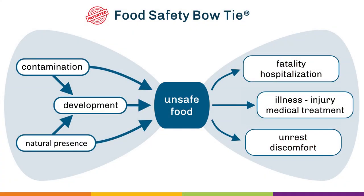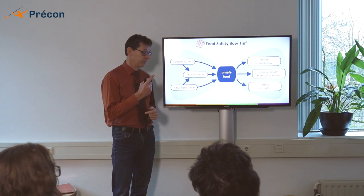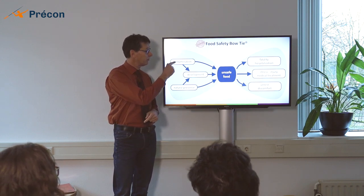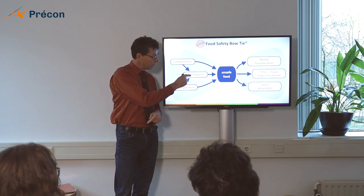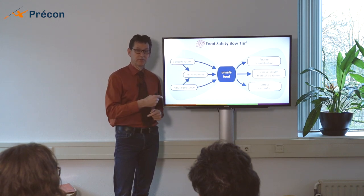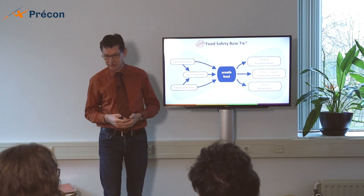When we look at the causes of unsafe food then one of the major causes is contamination. Contamination with bacteria or chemical substances. When it comes to contamination with bacteria then a small contamination will usually not be a direct cause for unsafe food. But if for example that one salmonella bacteria is going to grow and develop into one million salmonella bacteria then we'll have unsafe food.